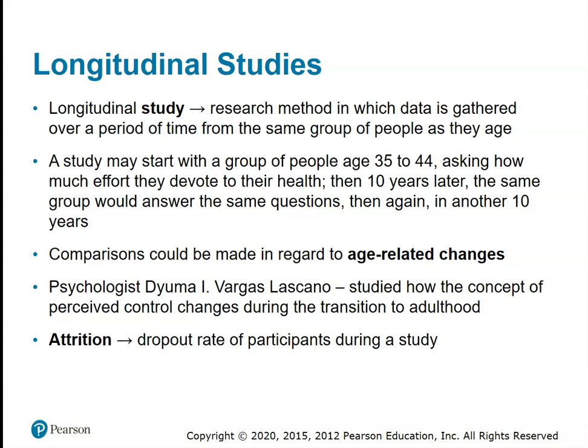The big problem with longitudinal studies is what we call attrition. People drop out of the study, people die, move, or enter mental hospitals. The difficulty is keeping all your subjects over a 30-year period. You might recruit 1,000 subjects, but if only 200 remain at the end, you have to ask whether something about those 200 subjects that were able to last has affected the results. Longitudinal studies not only take a lot of time, but they're hugely expensive and require significant effort to keep participants returning.